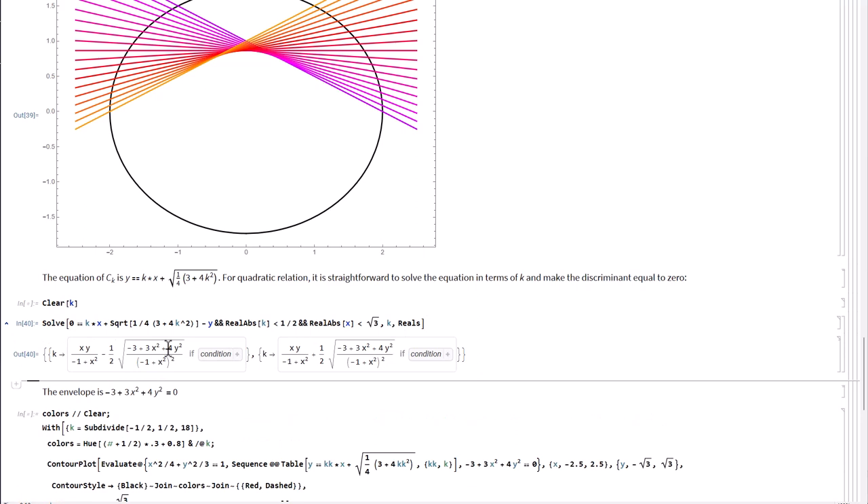So we are going to just use the same argument for this problem. So here, if we just solve just like the example here, we are going to solve that equation in terms of K. So K is the T here. So if we solve that, okay, so we will have this expression. And because we are only thinking about discriminant, so the only thing that we are interested in is this part, because X square minus one square, this thing is always like positive, you know, we only need to think about this part. And we want this part to be zero. It's minus three plus three X square plus four Y square is zero. So this is the envelope.